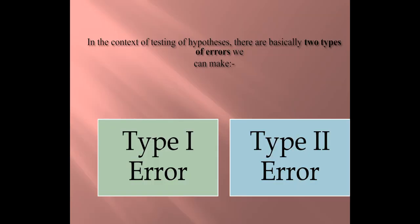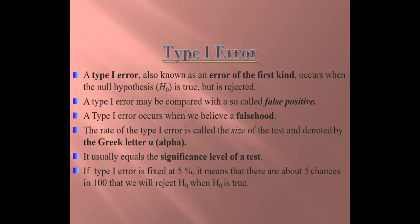In the context of testing of hypothesis, we can make basically two types of error. These can be classified as Type 1 error and Type 2 error. These are the two basic types of error that one can make. So what is Type 1 error? When we are talking about research methodology, we are talking about Type 1 error and Type 2 error.